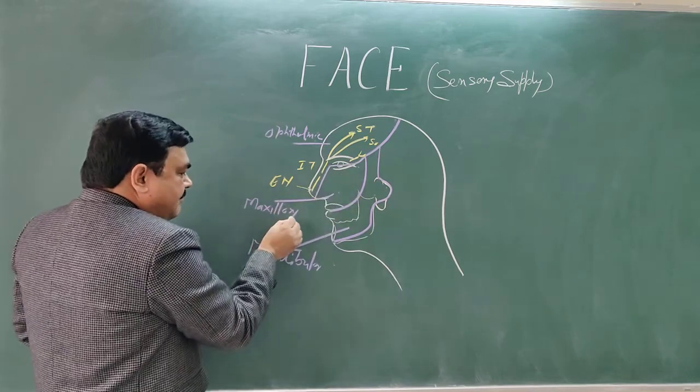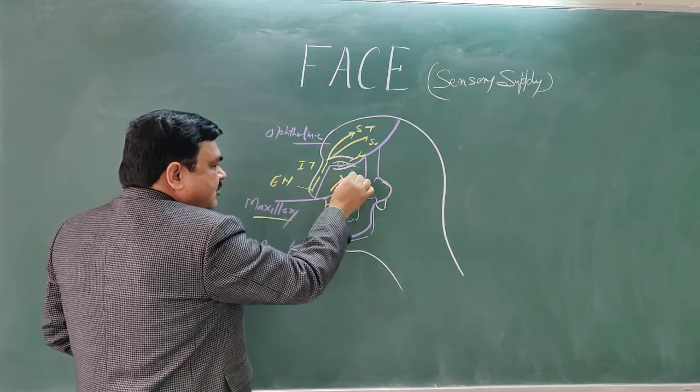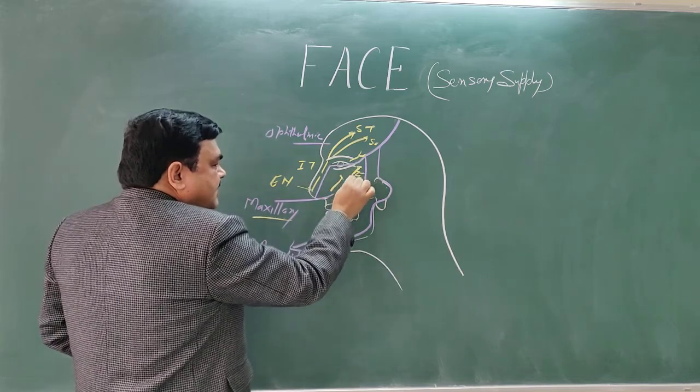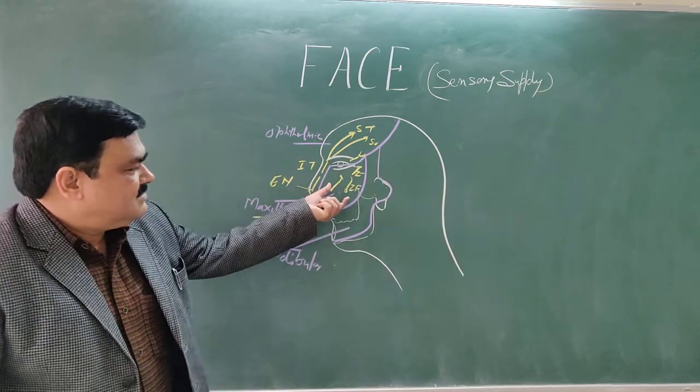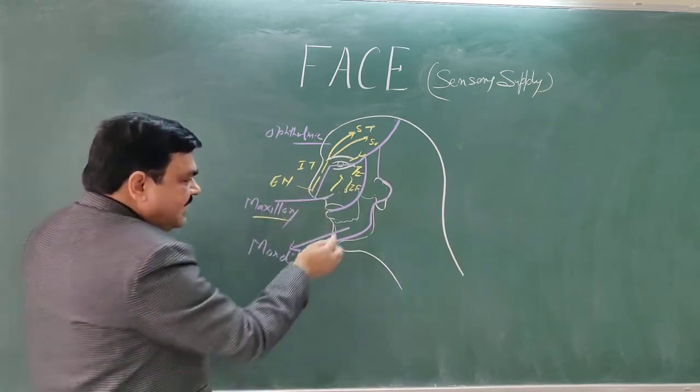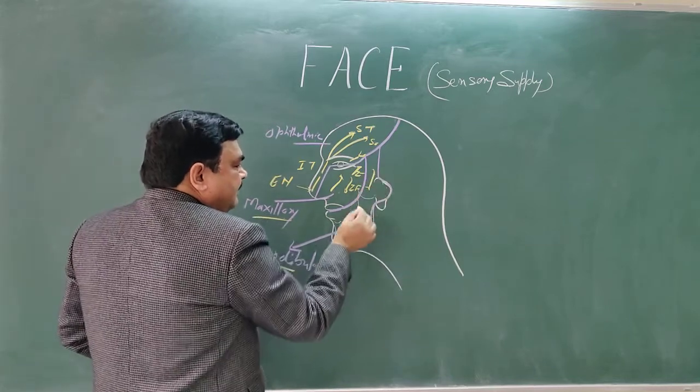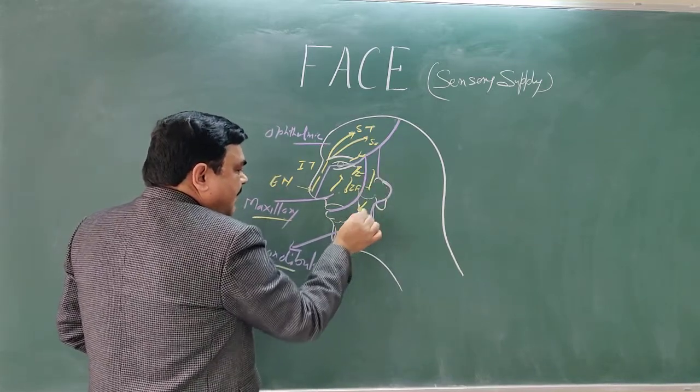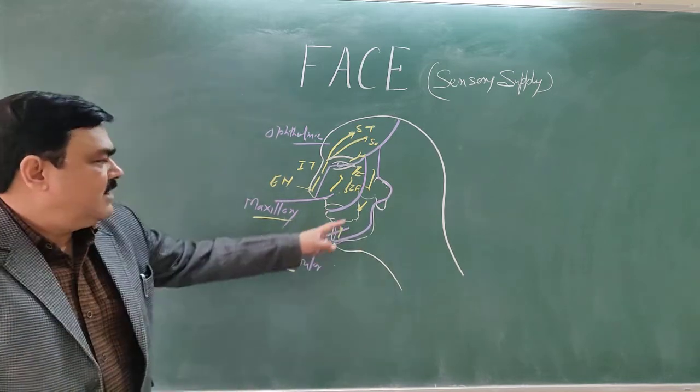Then, branch of the maxillary nerve. Here is infraorbital, zygomaticotemporal, zygomaticofacial. Three branches give supply to this region. And three branches of the mandibular nerve: auriculotemporal nerve, buccal nerve, and mental nerve.